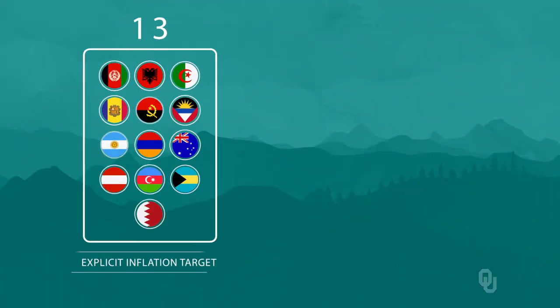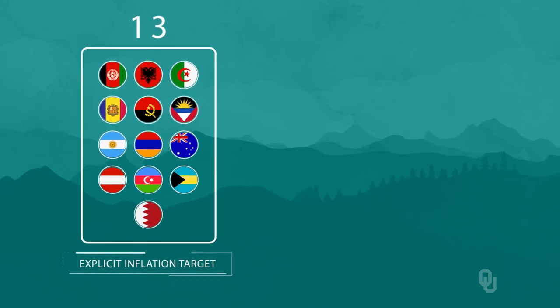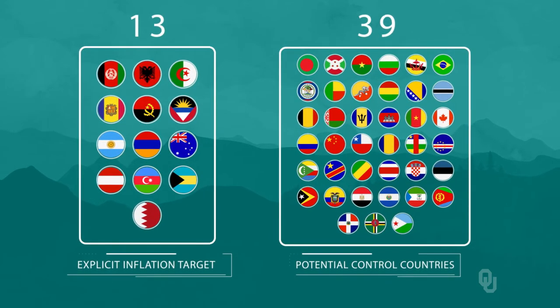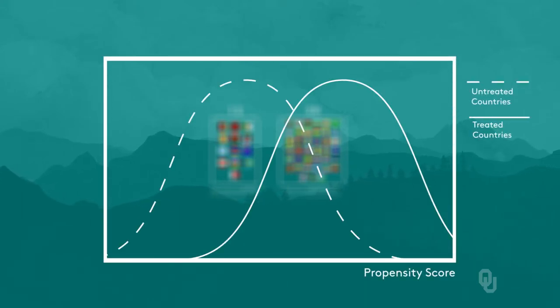Now let's discuss a paper by Lin and Yi that uses matching to test whether adopting a policy of inflation targeting lowers a developing country's inflation rate. The paper was published in the Journal of Development Economics in 2009. They have 13 countries that adopted an explicit inflation target and 39 other potential control countries. They use a probit equation to estimate the probability of adopting the policy and then match the 13 treated countries to controls based on the propensity score.